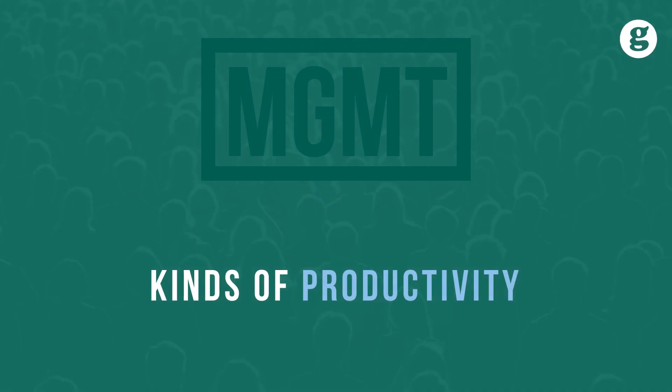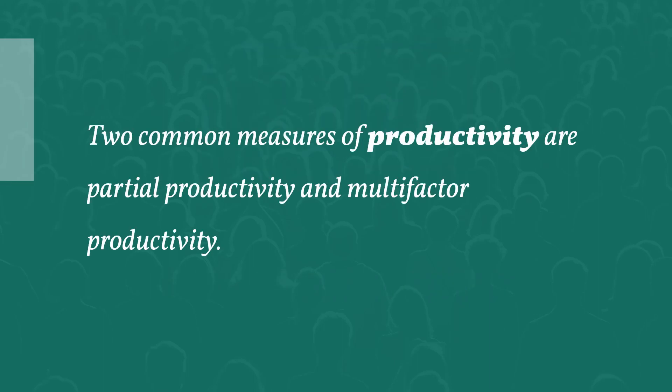Let's take a look at three important kinds of productivity. Two common measures of productivity are partial productivity and multi-factor productivity.